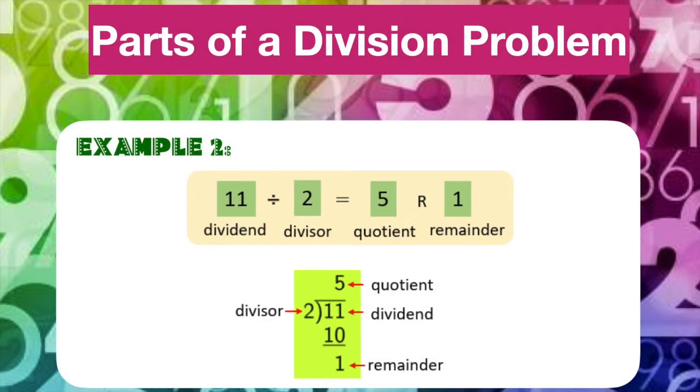Let's look at this example, example two. Once again, we see the division parts identified after the equation has already been solved. However, in this example, two cannot divide evenly into 11, resulting with five groups of two and a remainder of one. The remainder is what is left over when a number cannot be divided equally.